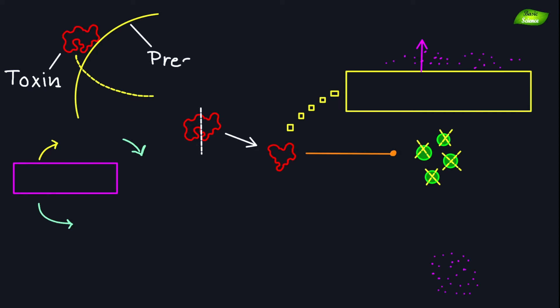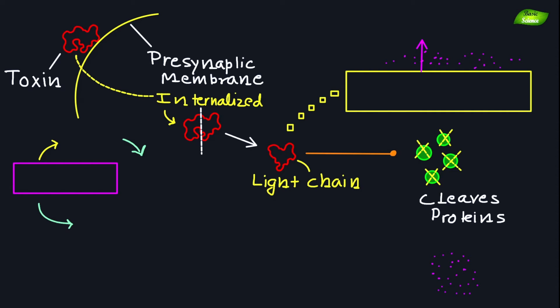Upon binding to the presynaptic membrane, botulinum toxin is internalized into the nerve cell via endocytosis. Once inside the cell, the light chain is released into the cytoplasm where it cleaves specific proteins involved in neurotransmitter release.